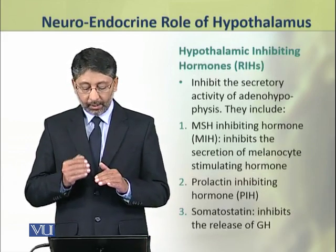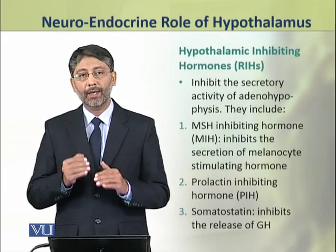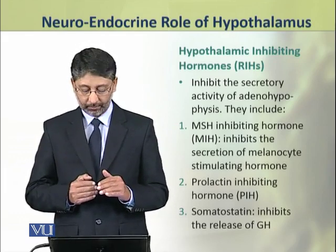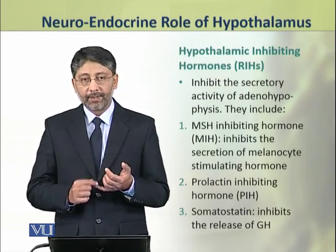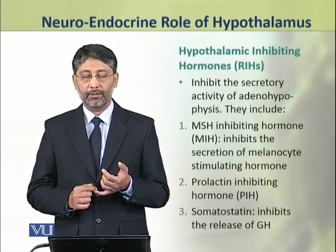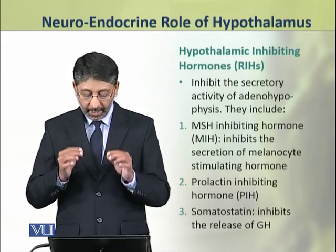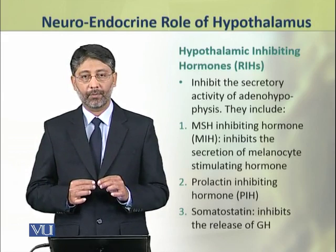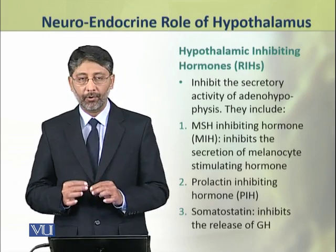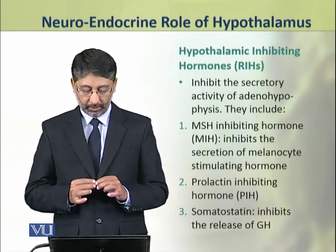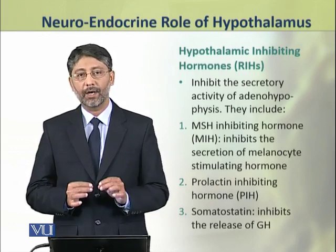There are three hypothalamic inhibiting hormones which inhibit the secretory activity of anterior pituitary. These include: number one, the MSH inhibiting hormone or MIH, that inhibits the secretion of melanocyte stimulating hormone. The second inhibiting hormone is the prolactin inhibiting hormone or PIH. And the third hormone is somatostatin, that inhibits the release of growth hormone.